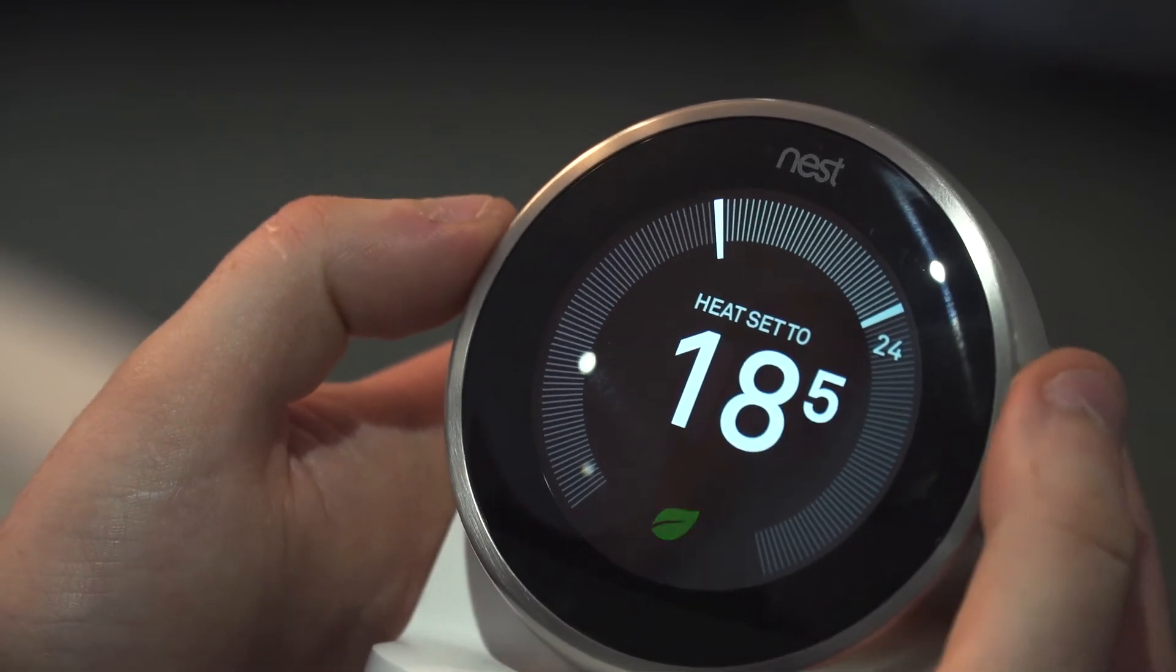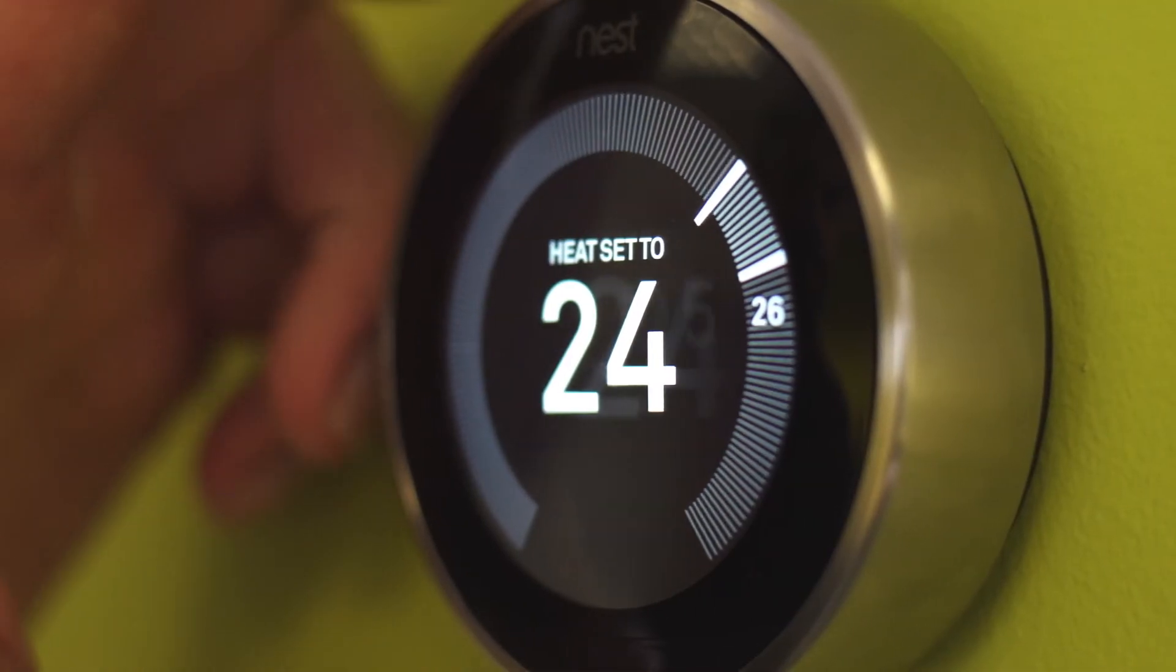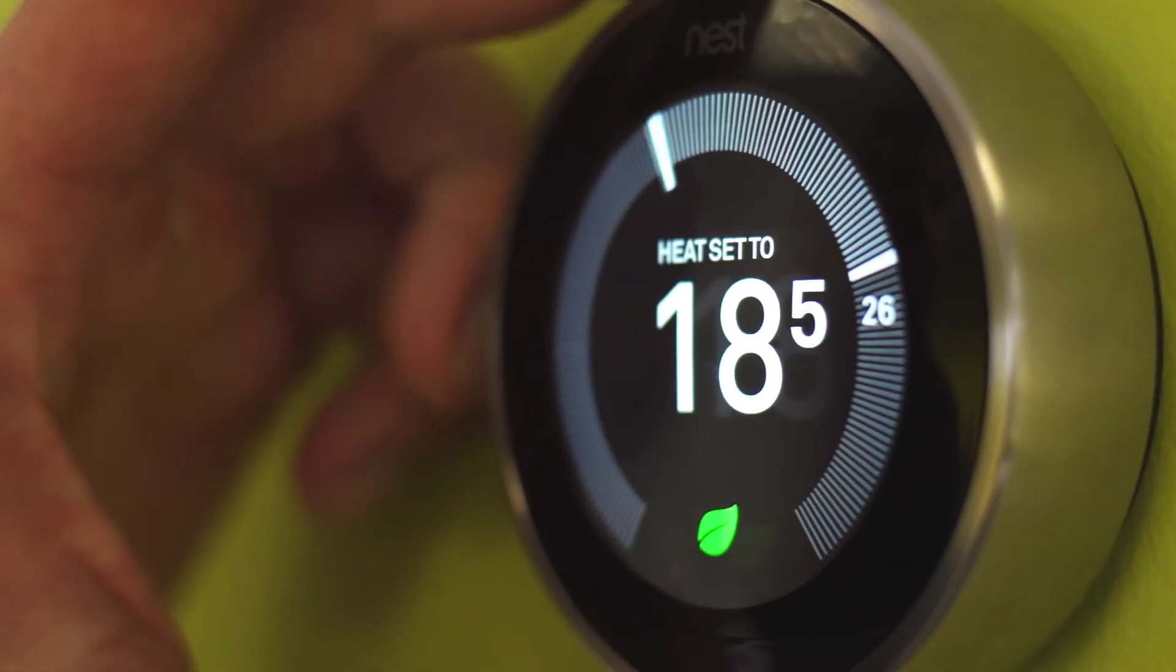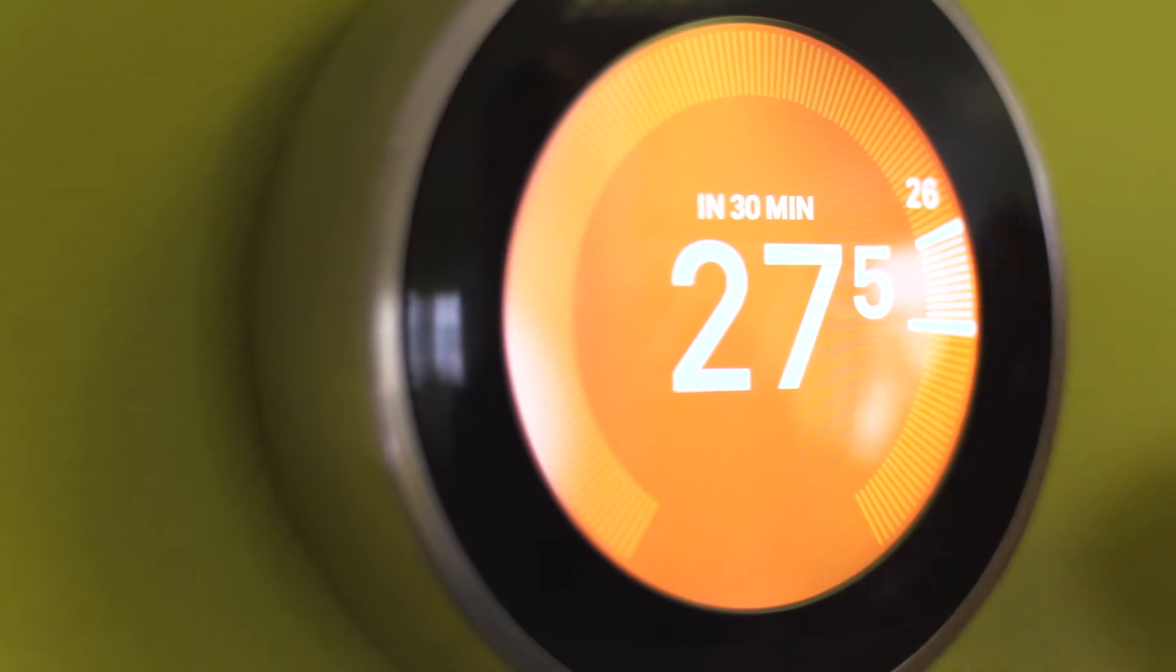You teach it by simply adjusting the temperature using the Nest thermostat: down when you leave the house, up when you come home, down when you go to bed.